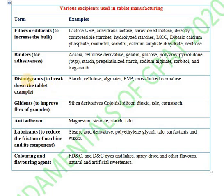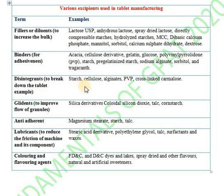Next are disintegrants or disintegrating agents. They are used to break down the tablet. Examples include starch, cellulose, alginates, polyvinyl pyrrolidone, and cross-linked carmellose (also known as croscarmellose). These act through different mechanisms — some disintegrants, like starch, swell upon contact with water and release the active ingredient in the stomach.